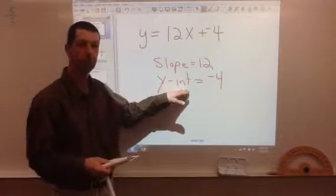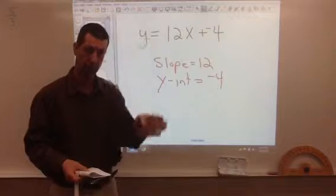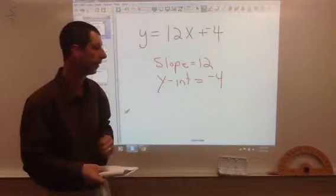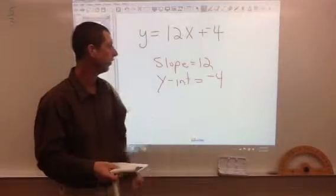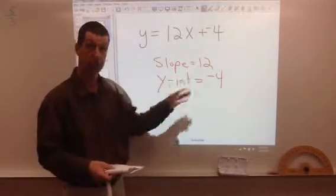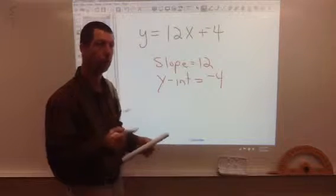The y-intercept, remember, is the point it crosses y, which is the vertical line on the coordinate grid. So that would be a negative 4, and then the slope of 12 is pretty steep. And I'm going to show you how you graph them on a coordinate grid here in a little bit.